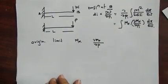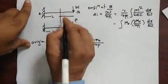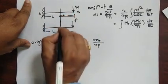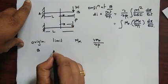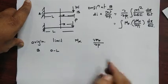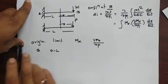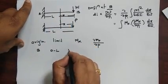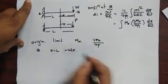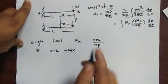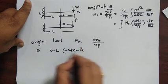Taking the bending moment at any distance x from the origin at B, with limit 0 to L: the bending moment due to load W is −Wx (hogging), and due to the fictitious force P it is −Px (also hogging). So Mx = −Wx − Px.